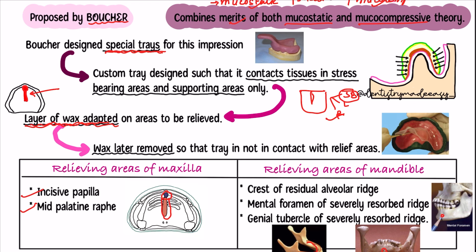A layer of wax is adapted over these relief areas — the incisive papilla and mid-palatine raphe, for example. When recording the impression, the complete tray is in contact with the mucosa. But then the wax is removed. As soon as the wax is removed, the area where it was placed is no longer in contact with the mucosa — a gap is created — so the tray does not contact the relief areas. This is the main concept of selective pressure theory.